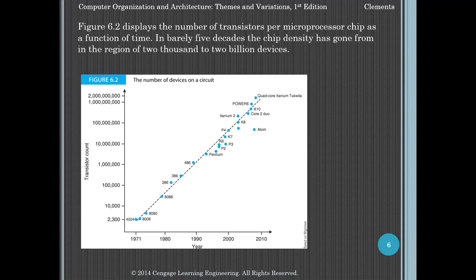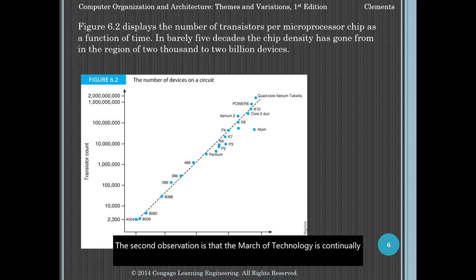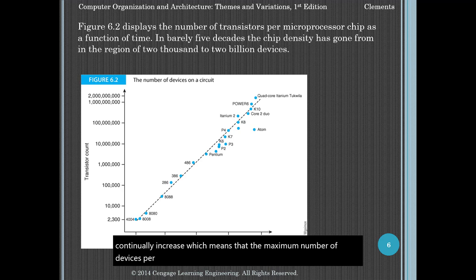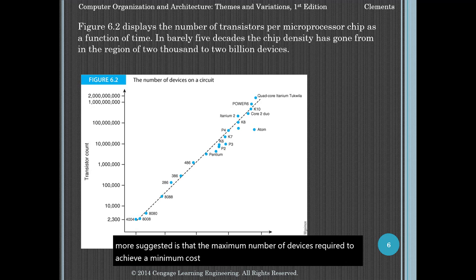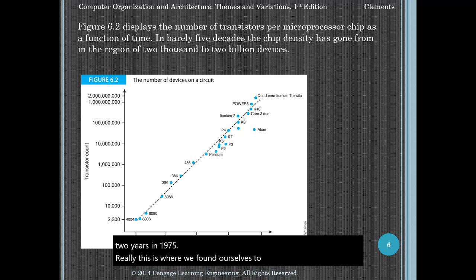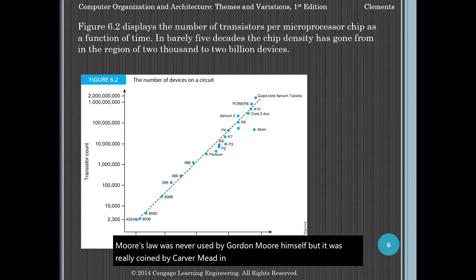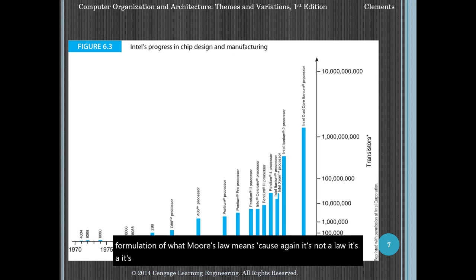Moore's second observation is that the march of technology is continually increasing the yield and maximum size of chips, which means the maximum number of devices per integrated circuit is increasing year by year and the minimum cost per device is decreasing. What Moore suggested is that the maximum number of devices required to achieve minimum cost would double every year. Although he changed the prediction to about every two years in 1975, this is where we've found ourselves to be. The term Moore's Law was never used by Gordon Moore himself — it was actually coined by Carver Mead in 1970. There's really no precise formulation of what Moore's Law means, because again, it's not a law, it's an observation.